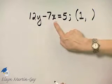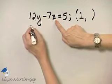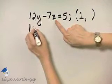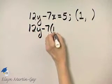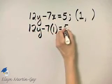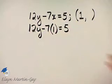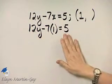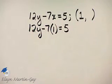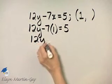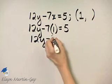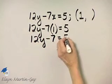So we will replace x with 1 and solve for y. I have 12y minus 7 times x is 1 is equal to 5. Now notice the only unknown in this equation is y, so let's solve for y. I have 12y minus 7 times 1 is 7 is equal to 5.